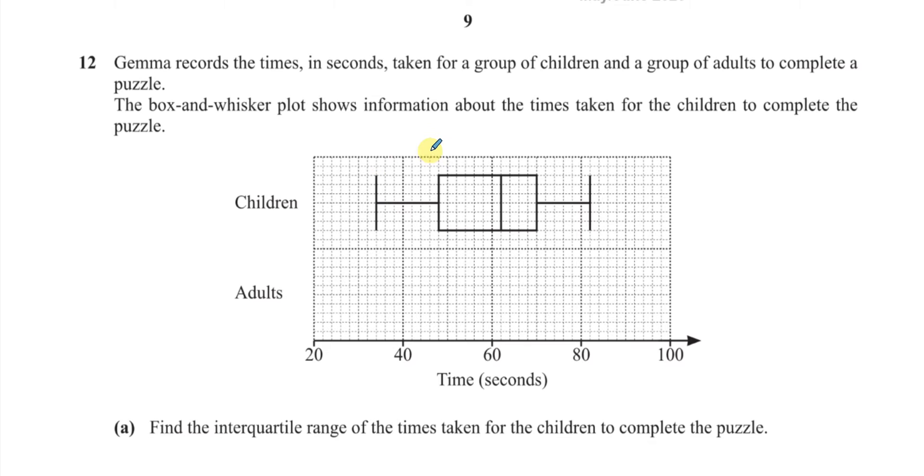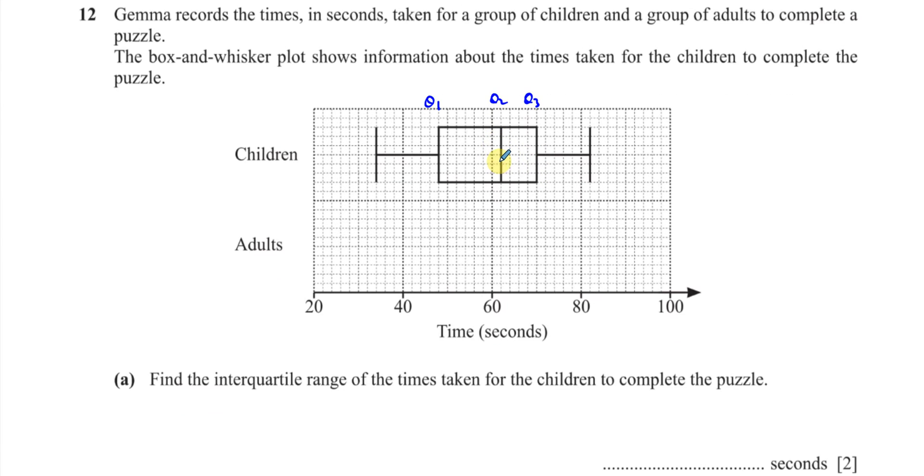So this is Q1, which is the lower quartile. This is Q2, which is the median. And this is Q3, which is the upper quartile. And the interquartile range is equal to the upper quartile minus the lower quartile. So we have to read the upper quartile, which is this value over here. Now, if we look here, it looks like each of these is 2, 62, 64, 68, 62, 4, 6, 8, 10.